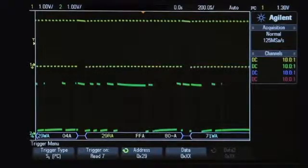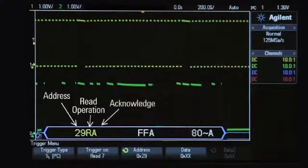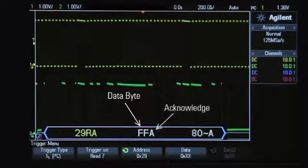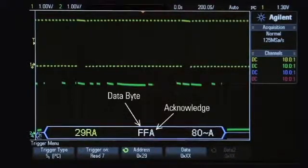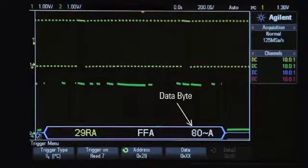Our particular frame is interpreted as a read operation from address 29 with an acknowledge, followed by a data byte equal to FF with an acknowledge. Finally, is another data byte equal to either 80 or C0 without an acknowledge.